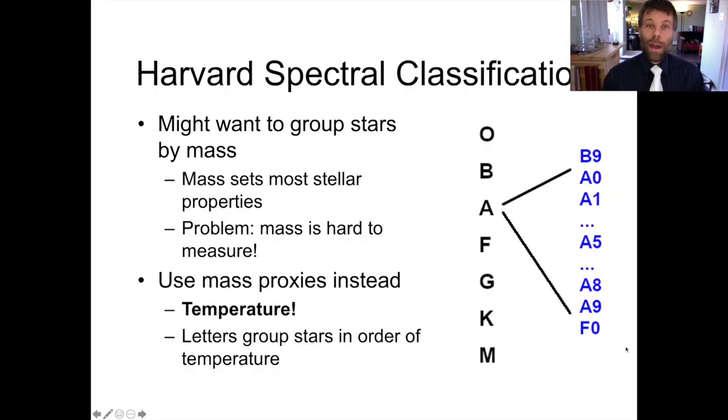Remember that the Harvard spectral classification scheme arranges stars according to their temperature. Mass governs all of the other observed properties of main sequence stars, including temperature, but mass is very hard to measure. So we use temperature as sort of a mass proxy. And if we arrange the stars in order of temperature, they come in this weird sequence of non-alphabetical letters that goes O, B, A, F, G, K, and M.